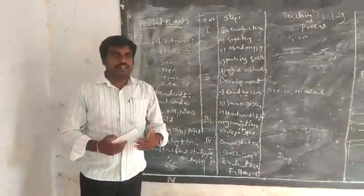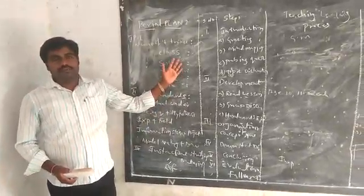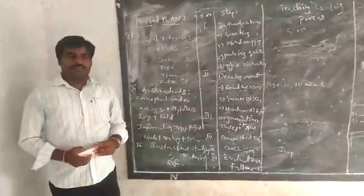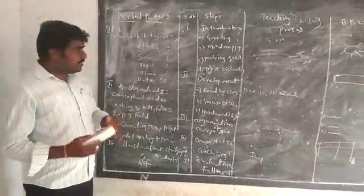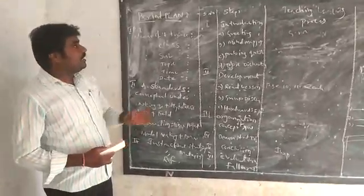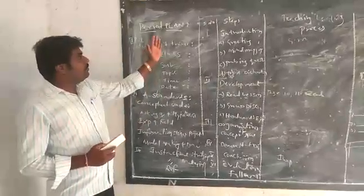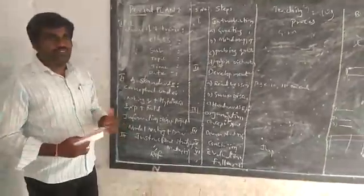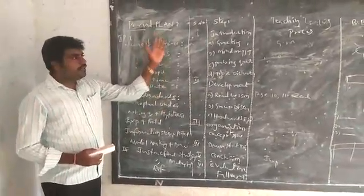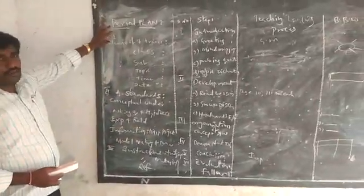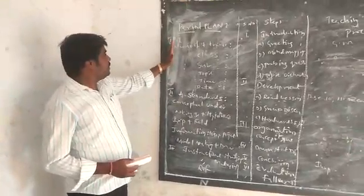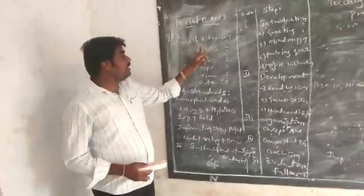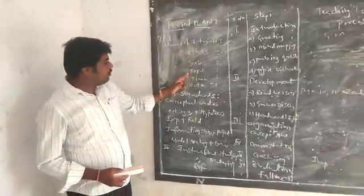The class is a period of 45 minutes. The first step is to give the information about the name of the teacher training: class, subject, topic, and time.